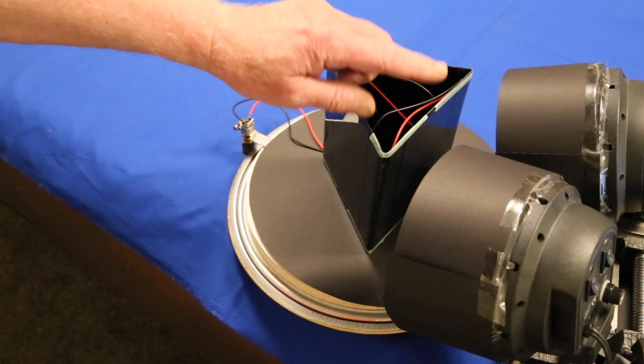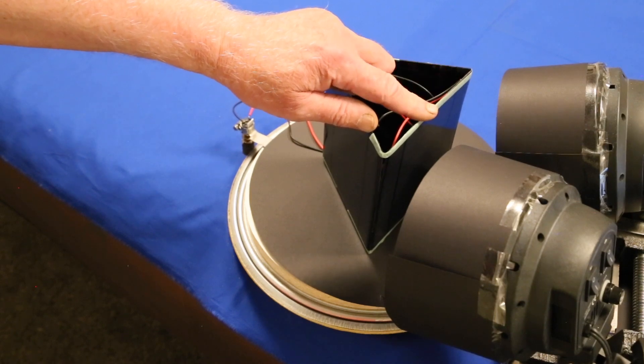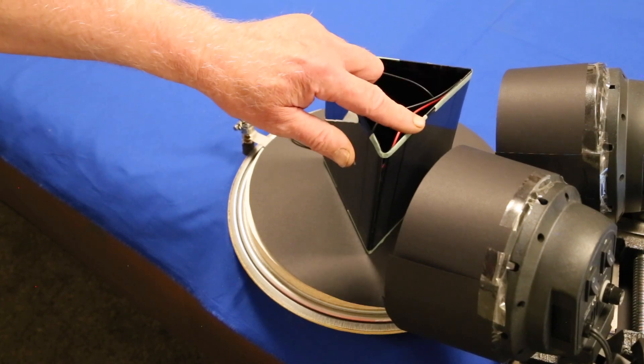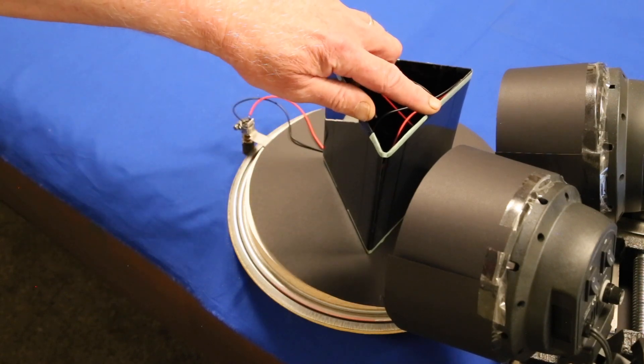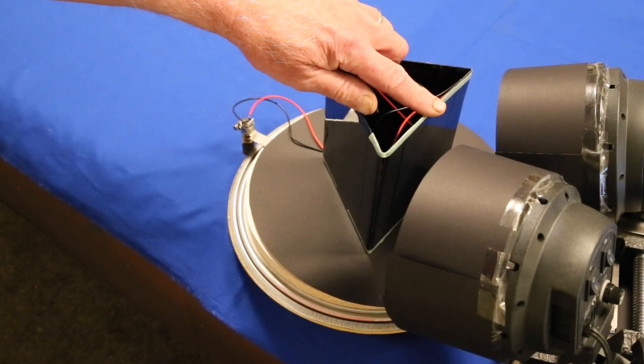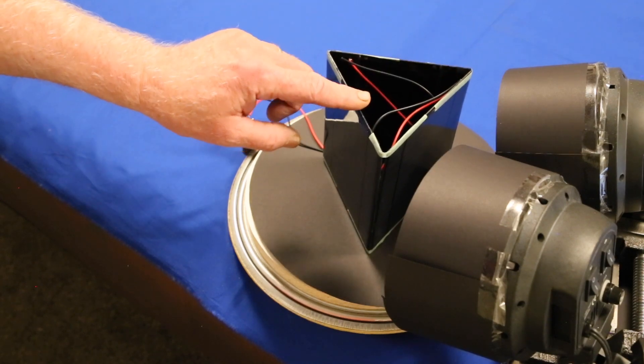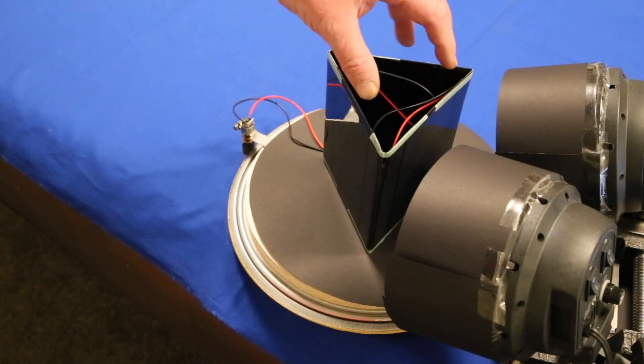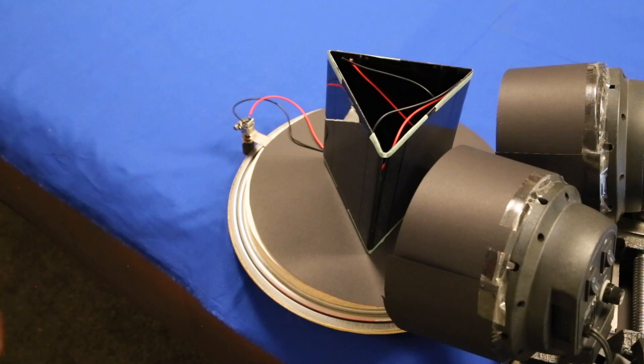The solution is to put a third solar cell on the back of the tracker wired the same way as the right hand cell. So when the Sun comes up it hits this rear solar cell, drives it counterclockwise until this cell is picked up, continues to drive it counterclockwise until the tracker is pointing to the Sun.